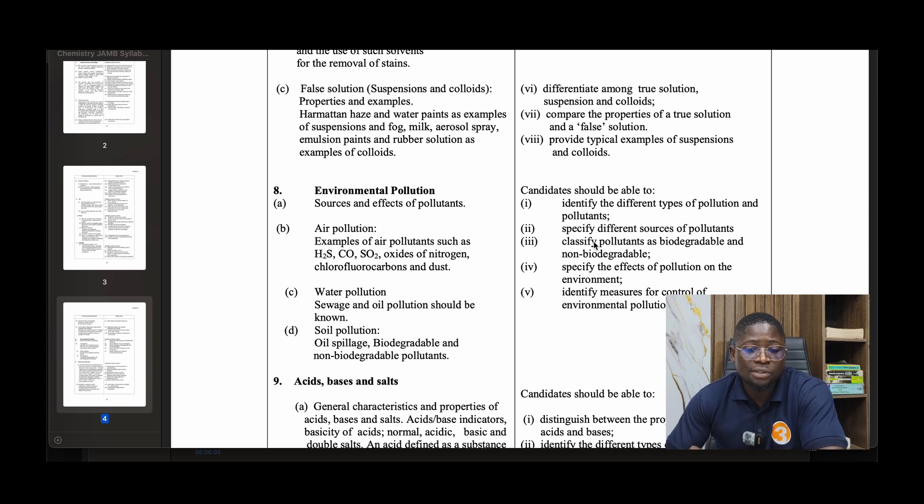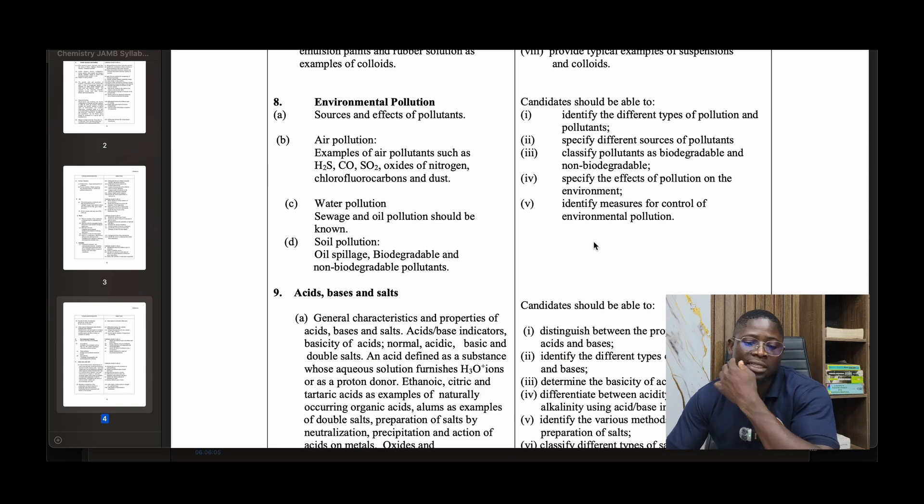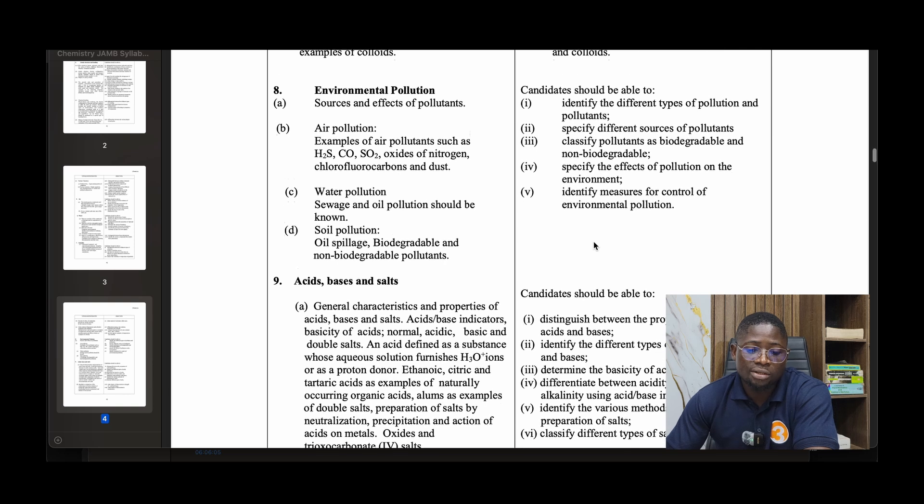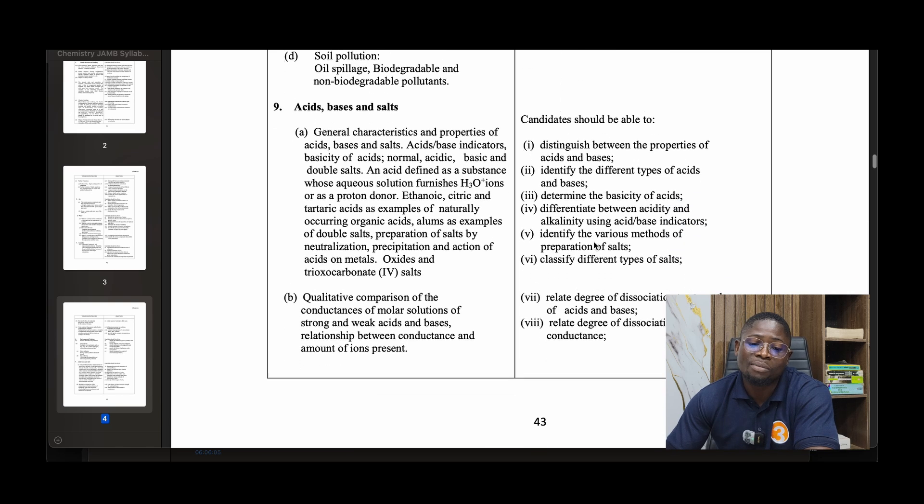Harmattan haze and water paint as examples of suspensions. Fog, mist, aerosol spray, emulsion paint, and rubber solution as examples of colloids. Number nine: Environmental pollution - sources and effects of pollutants. Air pollution: examples include hydrogen sulfide, carbon monoxide, sulfides, oxides of nitrogen, chlorofluorocarbons, and dust. Water pollution: sewage and oil pollution. Soil pollution: oil spillage, biodegradable and non-biodegradable pollutants.